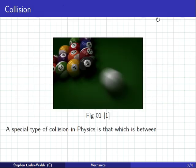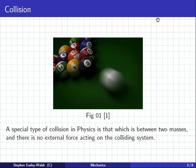Collisions is a special type of problem in physics. Between two masses, and there's no external force acting on the colliding system. We are looking at problems where we have two things, and they come together and they collide. But what's important is there's no external force. Meaning, as this slides along the table, there is no force pushing it, and also, unrealistically, there's no friction.